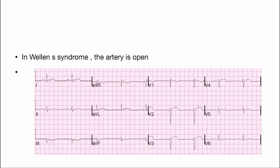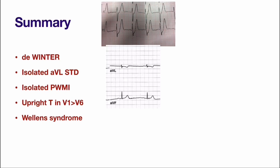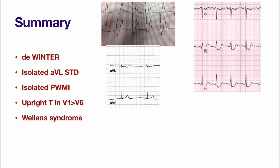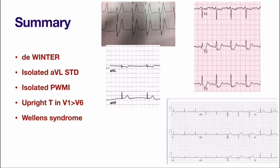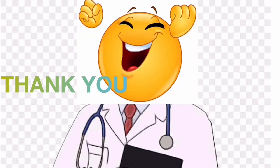In summary, we discussed 5 important ECG patterns which you may miss if unaware, and missing them can cost a person's life. They are: De Winter pattern, isolated aVL ST depression, isolated posterior wall MI, upright T-wave in V1 greater than the T-wave height in V6, and Wellens syndrome. There are 5 more ECG patterns which will be discussed in the upcoming video. Thank you for watching.